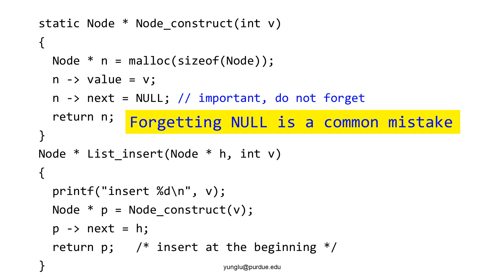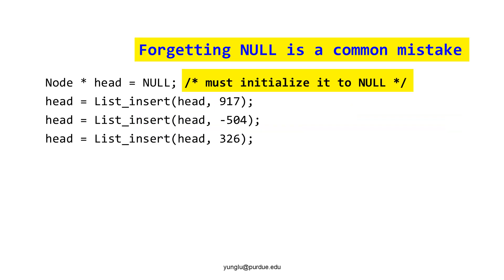Next, let's consider the insert function. The function takes two arguments: the first is a pointer for the node, and the second is an integer. The first line prints the integer. The second line calls the construct function. The third line assigns the first argument to the next attribute of p. The function returns p at the end. This slide shows how to call the insert function. We first create a pointer of node and initialize it to null — it is really important to initialize this pointer to null. Then the program calls the insert function for inserting three numbers: 917, negative 504, and 326 into the linked list.